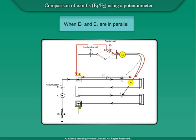When the two cells are connected such that the negative of E1 is connected to the negative of E2, the cells are opposing each other, and it is called the difference.